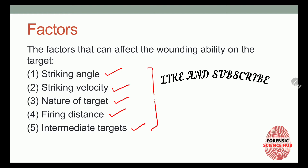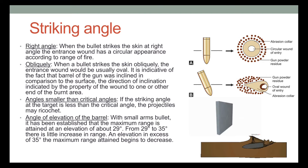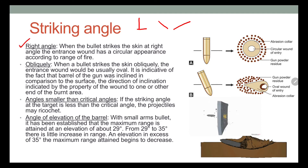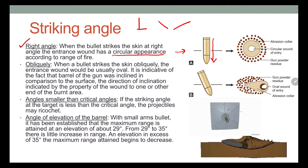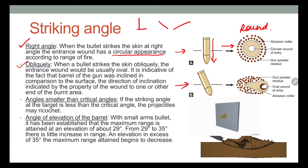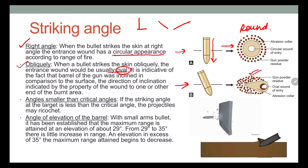First, let's talk about the striking angle. The angle can be of different types — it can be perpendicular, obtuse, or acute. Depending on that, the shape of the wound is going to change. If the bullet strikes the target at a right angle, we see a circular appearance of the wound. But if there is any oblique angle, the entrance wound would be oval in shape. You can see in this picture that the wound has been formed in an oval shape, whereas here it is round.